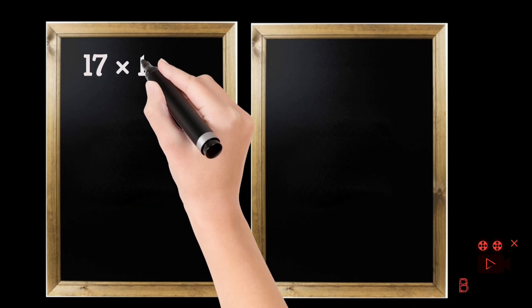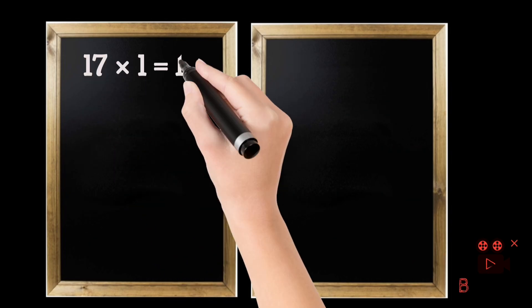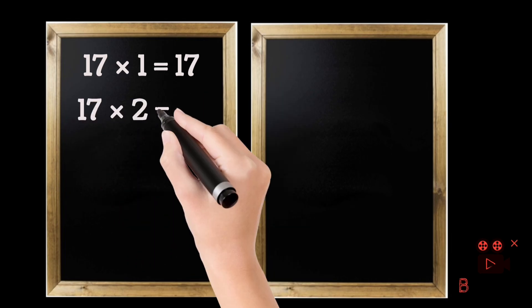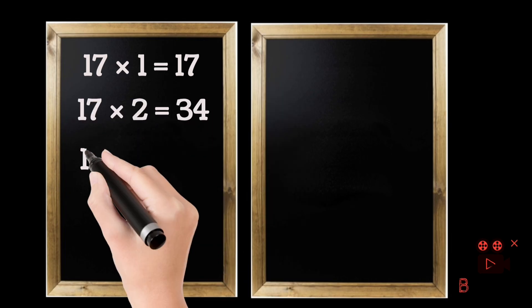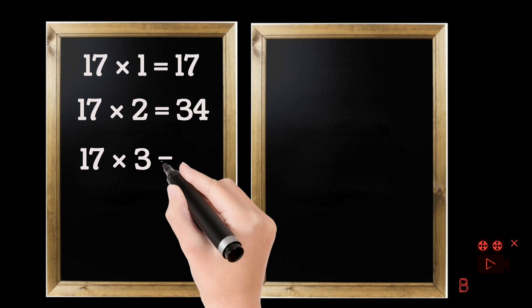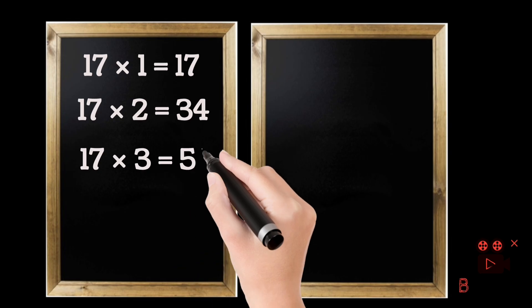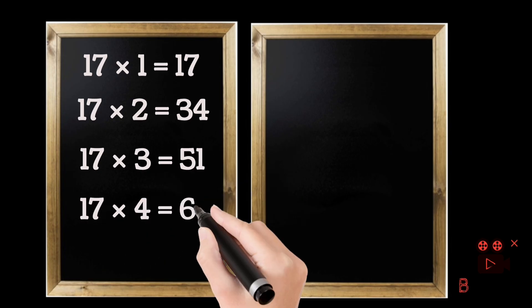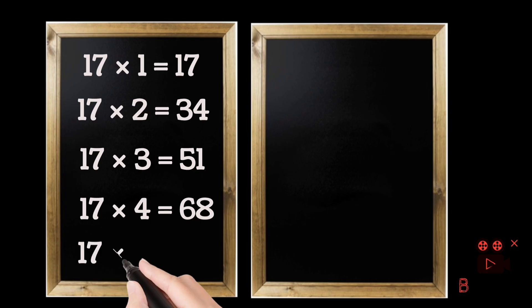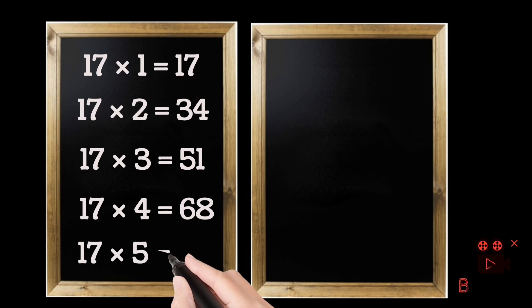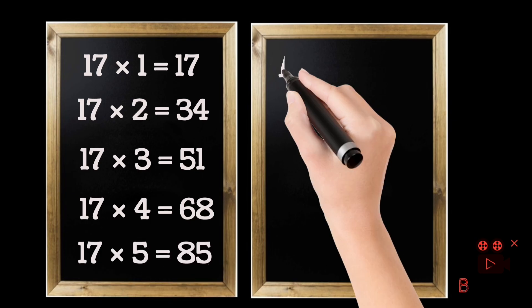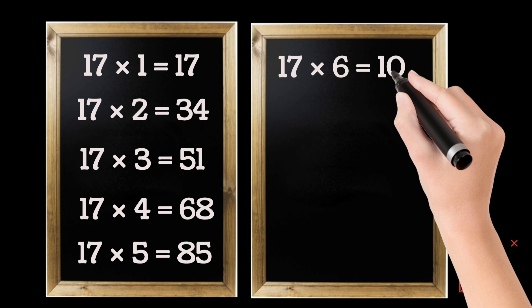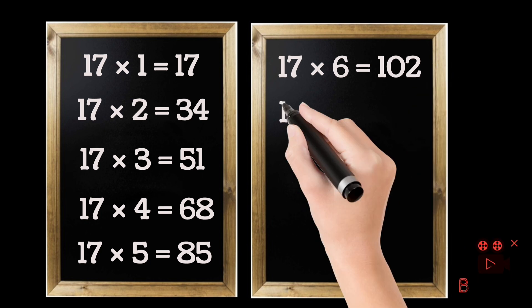17 ones are 17. 17 twos are 34. 17 threes are 51. 17 fours are 68. 17 fives are 85. 17 sixes are 15. 17 sixes are 102.